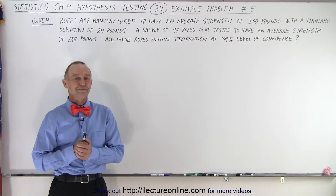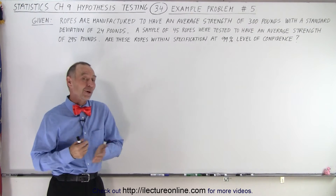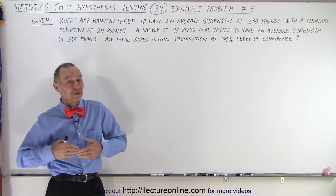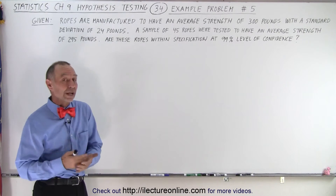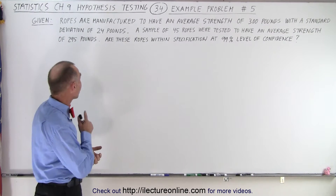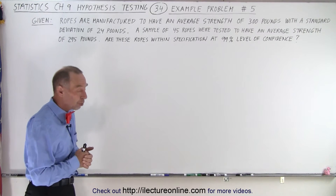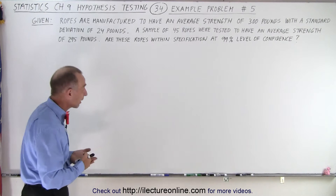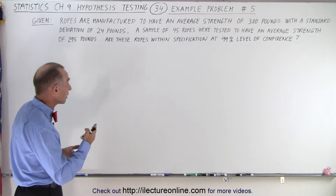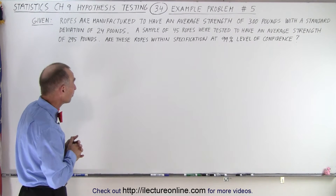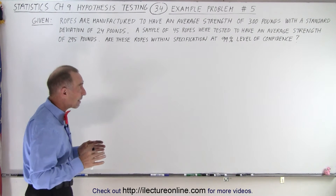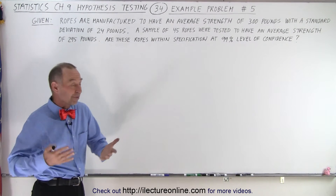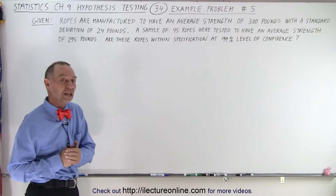Welcome to our lecture online. Our next problem is an interesting one. Here we have a manufacturer who manufactures ropes, and the specifications are that they should have an average strength of 300 pounds with a standard deviation of 24 pounds. We take a sample of 45 ropes, test their strength, and find that on average those 45 ropes had a strength of 295 pounds. We want to have a 99% confidence level that the sample indicates the ropes being manufactured are within the specification limits.